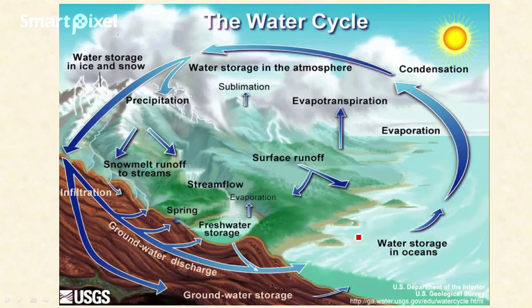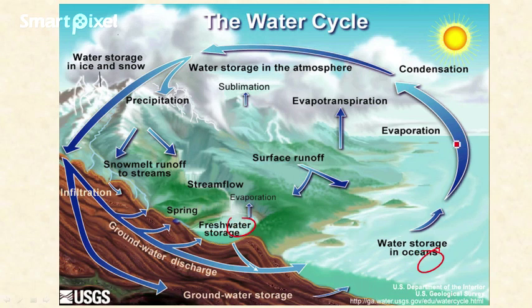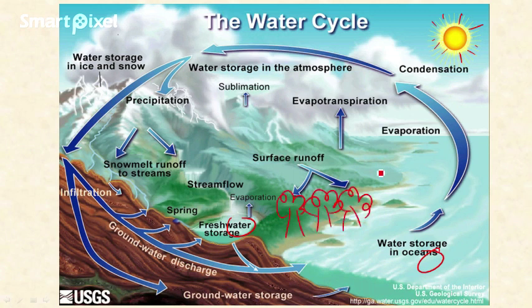Here is the pictorial representation of the water cycle. Water existing on the Earth's surface — including oceans, freshwater storage, and rivers — is evaporated into the atmosphere with the Sun's energy as the driving force.